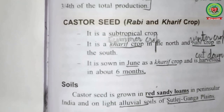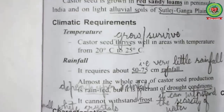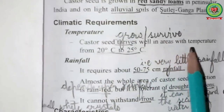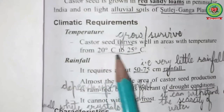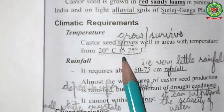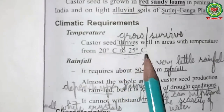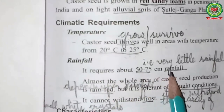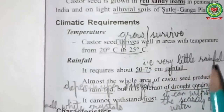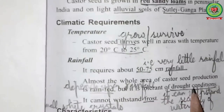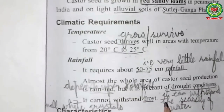For climatic requirements of castor seed: temperature — castor seed thrives in areas with temperature from 20 degrees Celsius to 25 degrees Celsius; it cannot tolerate temperatures below 10 degrees Celsius or above 30 degrees Celsius. For rainfall, it requires about 50 to 75 cm — a very little rainfall. Almost the whole area of castor seed production is rain-fed, meaning it depends mainly on rain. It is tolerant of drought conditions — it can withstand scarcity of water — but it cannot withstand frost.